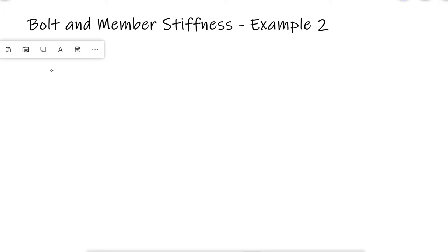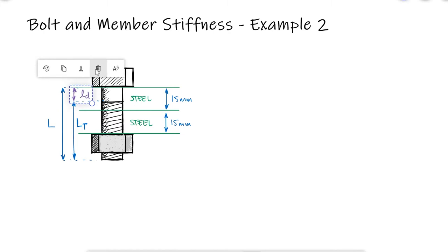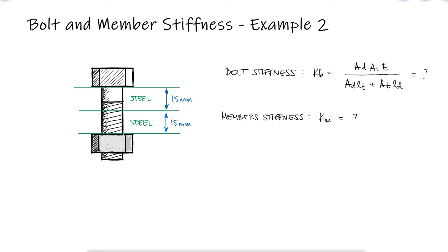For the same M14 hex head bolt and nut and the two 15mm steel plates from example 1, what is the bolt stiffness and the stiffness of the members if we add a 3.5 millimeter thick metric plane washer under the nut?